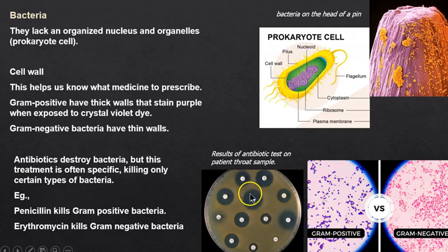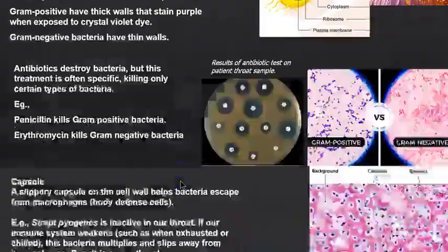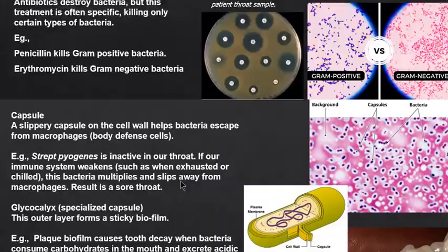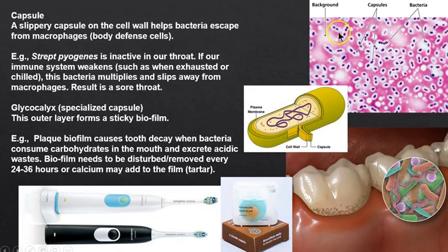If penicillin is not working, we might try erythromycin. Gram staining and the cell wall are very important in identifying bacteria. Bacteria also have a capsule — such as Streptococcus pyogenes — which lives in our throat, often inactive. But if we get chilled, exhausted, or depressed, we start getting that scratchy throat and it slips away from our macrophages.